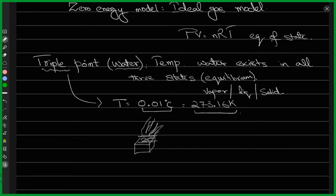We have less than a minute remaining. Next time we'll start with the thermal properties of materials: specific heat capacity, latent heat, internal energy, and then the different types of thermodynamic processes — isothermal, isobaric, and adiabatic. Hopefully in the next class we will try to finish this chapter.